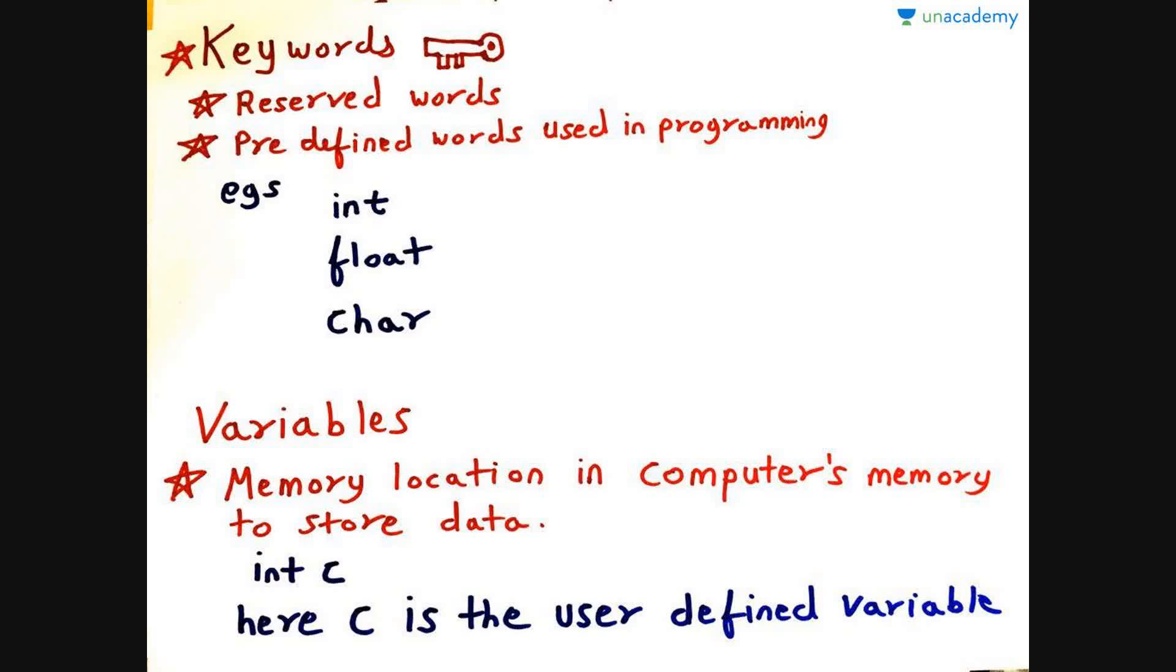Now let's move to variables. Variables are memory locations in the computer's memory which are used to store data. For example, int c - here c is the user-defined variable used to store data.